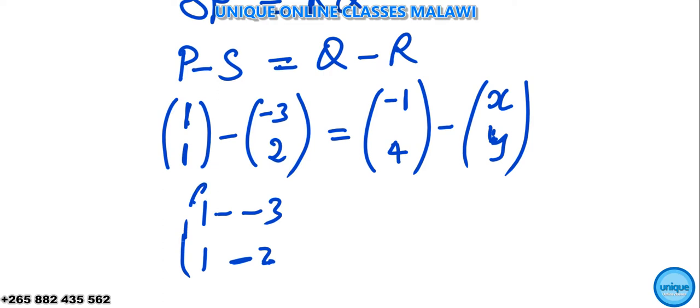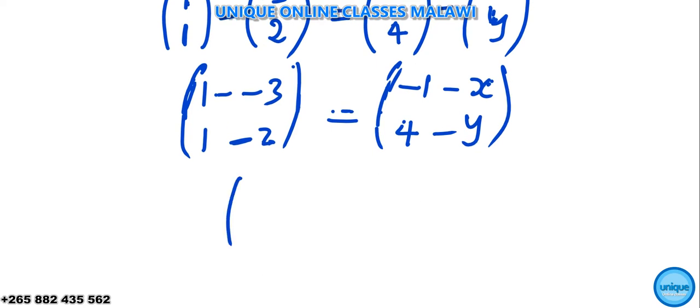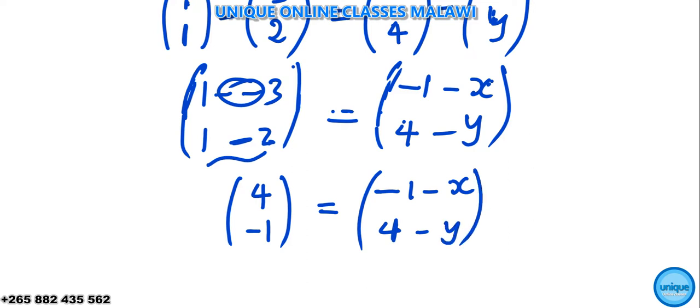So removing the brackets we have 1 minus minus 3, then 1 minus 2. Then it's equal to negative 1 minus X, then 4 minus Y. 1 minus minus 3, we have a positive sign, so it will be 1 plus 3 which is 4. And the difference of those numbers 1 minus 2 that's negative 1 here. Then it's equal to negative 1 minus X, this is 4 minus Y.